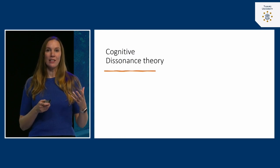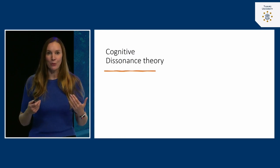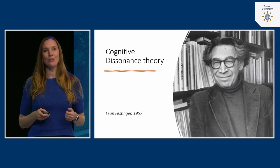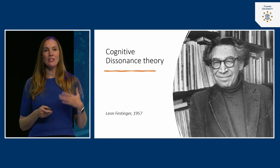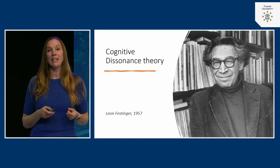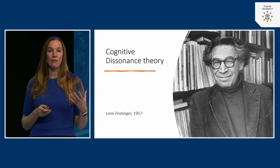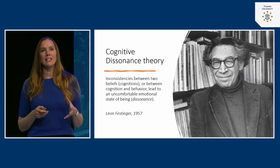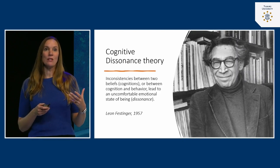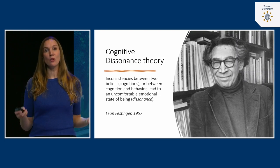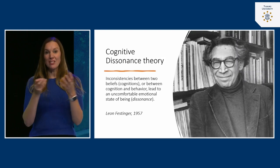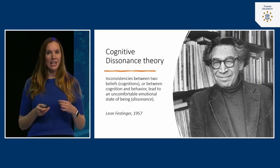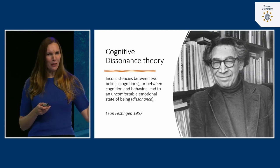According to cognitive dissonance theory, something happens within people the moment their ideas are battling with their behaviors. Cognitive dissonance theory was first developed by Leon Festinger in 1957, and later many other researchers continued his work. The main idea is that when we experience inconsistencies between two beliefs — two different cognitions — or between cognition and behavior, this leads to an uncomfortable emotional state called dissonance.